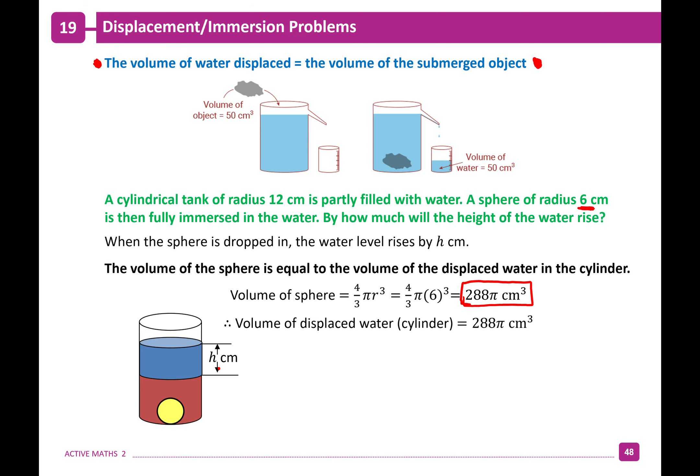We know the volume of the sphere equals the volume of the displaced water, so the volume of displaced water is 288π. Now substitute into the formula for the displaced cylinder shape: π r² h = 288π.